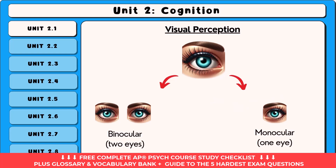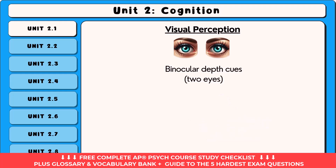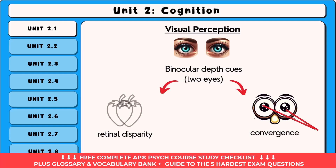AP Psychology asks you to understand the difference between binocular and monocular depth cues. Binocular depth cues are visual cues that require both eyes to perceive depth and distance. AP Psychology requires that you know about two binocular depth cues: retinal disparity and convergence.